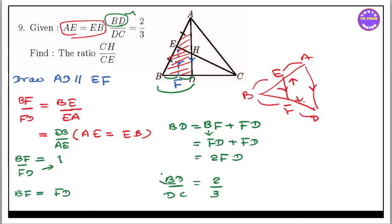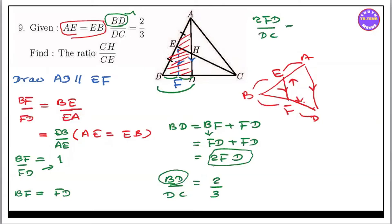We need to write BD. BD is equal to 2FD. So, 2FD by DC equal to 2 by 3.